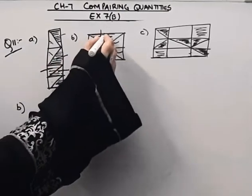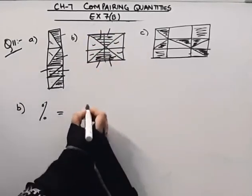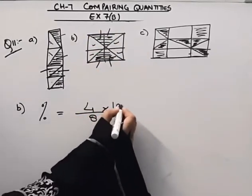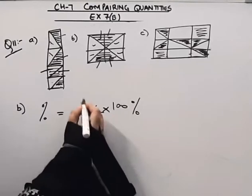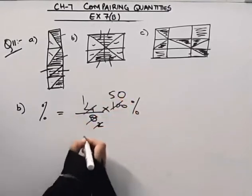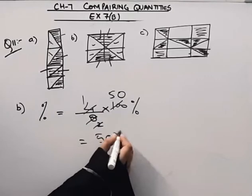Number of shaded blocks are 1, 2, 3, 4. There are 4 blocks shaded. So 4 times 2 is 8, 4 times 5 is 20. So the answer is 50 percent.